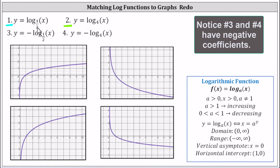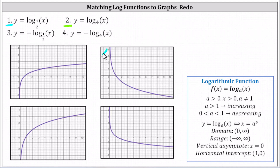For number one, the base is one half, and therefore the function is decreasing, or the graph is going downhill from left to right. For number two, the base is four, and therefore the function is increasing — the graph must go uphill from left to right. This indicates that the graph for number one must be one of the two decreasing graphs, and the graph for number two must be one of the two increasing graphs.